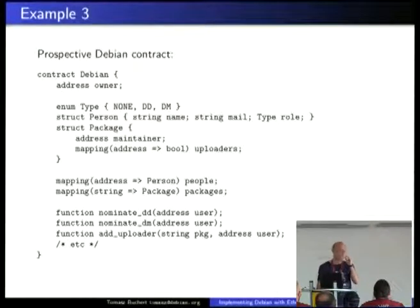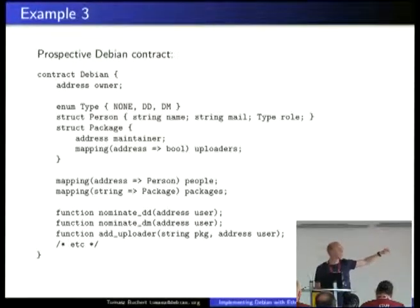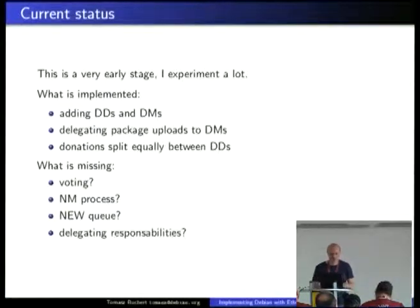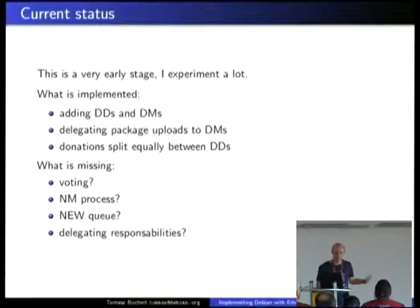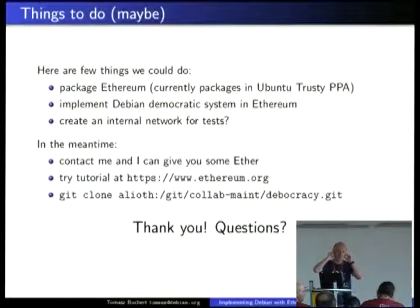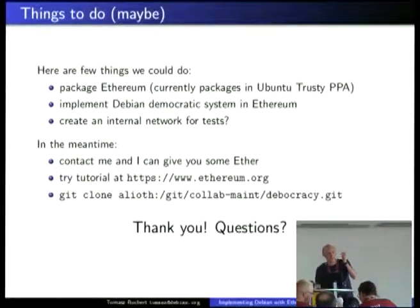I want to map people and packages that they can upload, the new member process, and so on — as an exercise to actually understand how Ethereum works. I want to reimplement Debian with Ethereum. I've done some basic research and implemented some basic stuff like adding DDs. There's no voting yet, that may be a bit complicated, but I welcome you to help. We could also package Ethereum, though that may be difficult because it's moving very fast. If you are interested, please contact me — I have some Ether I can give you so you can play with it.